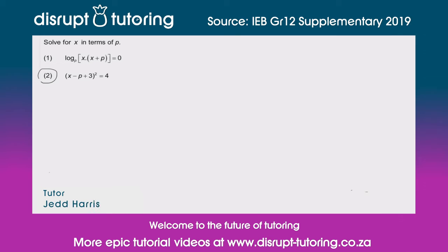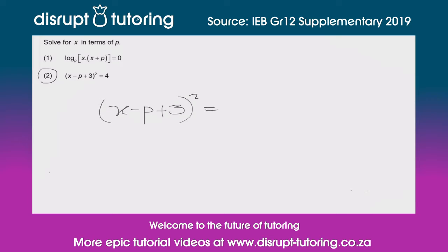Hey peeps, it's Jed here from Disrupt Tutoring — such a pleasure to join you today. We're going to deal with an algebraic equation question taken from the IEB's 2019 supplementary exam. We're going to do two in this video, and the equation is: (x minus p plus 3) squared equals 4. We need to solve for x in terms of p.